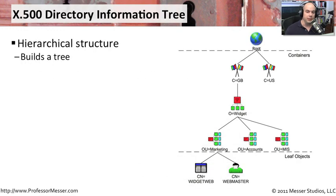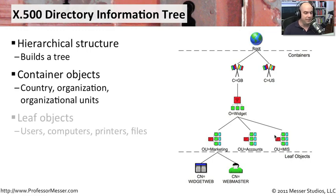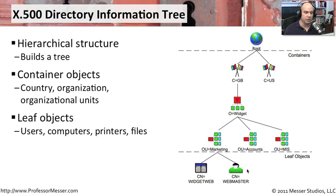If we view this graphically, it looks like a tree, where you start at a root and work outward through a hierarchical structure of resources. You have container objects — which are countries, organizations, and organizational units — and you also have leaf objects. Leaf objects are resources like users, printers, servers, and files. The tree starts at the root and works its way out through containers and finally to those leaf objects.